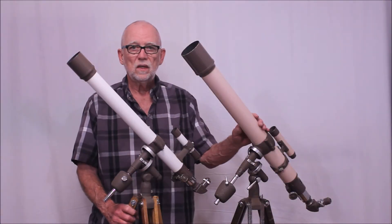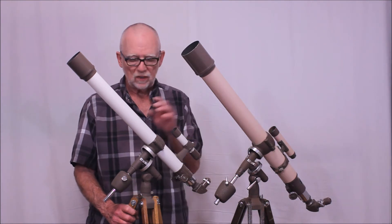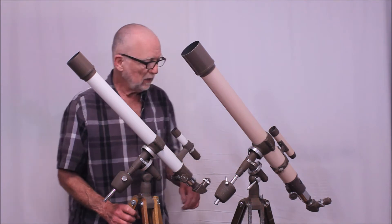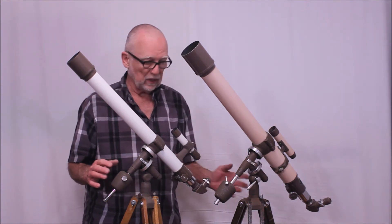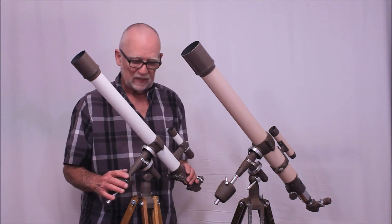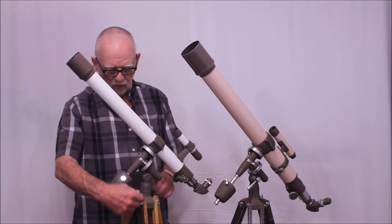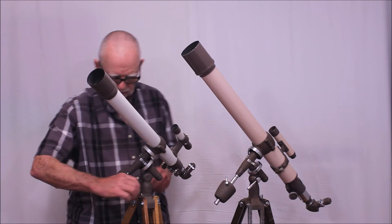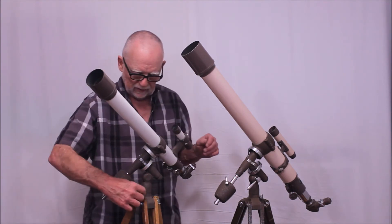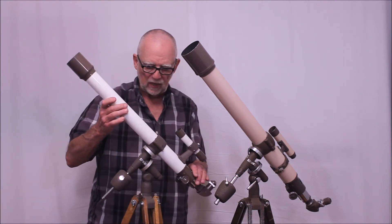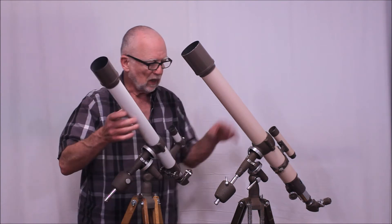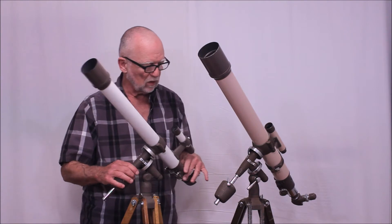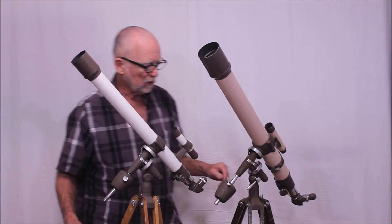Okay now I've got the Swift Model 839 set up next to the Model 838 50 millimeter scope. I think right away you can detect that they are almost identical in many respects. This mount, this equatorial mount is just for all practical purposes identical to this one. These, the sizes, everything here is absolutely correct.